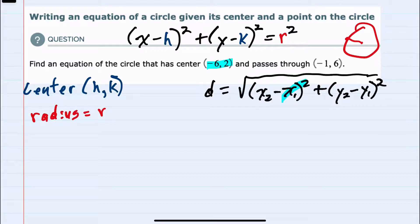And here we have the point (-6, 2) which I'll use as my 1 values, and we have the point (-1, 6) which I'll use as my 2 values.